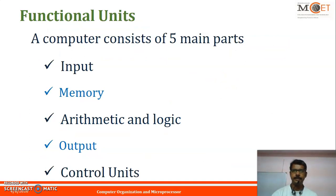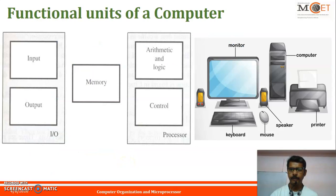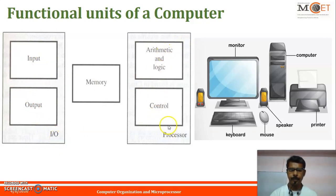In a computer there are five main parts: input unit, memory unit, arithmetic and logical unit, output unit, and control unit. This is the block diagram of the computer functional units. The input and output unit are connected together and called the I/O unit. The processor is the ALU and control unit combined, along with memory. We can see this through an example.